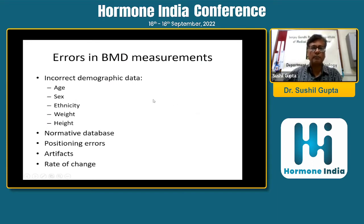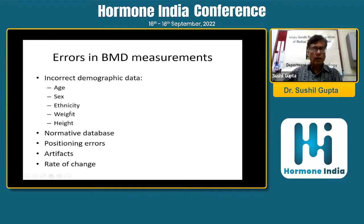Errors in BMD measurements can happen because of incorrect demographic data — age, sex, ethnicity, weight, and height. There is a progressive decline of BMD with age, and BMD differs between males and females, so different normative data are used. Ethnicity varies; we are still largely using Caucasian data in the country due to non-availability of local national reference ranges, though it is important to have proper national reference data. Weight and height should be accurately measured as they influence BMD and its interpretation.